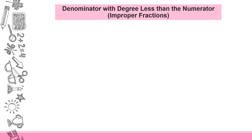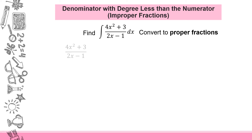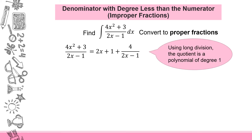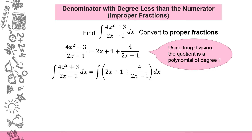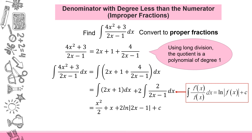Here is an example integrating an improper fraction where the degree of the numerator is greater than the denominator. The numerator is degree 2 and the denominator is degree 1. We convert to a proper fraction using long division: the quotient is a polynomial of degree 1 and the remainder forms a partial fraction 4 over (2x minus 1). Integrating separately, the final answer is x² over 2 plus x plus 2 ln|2x minus 1| plus c.